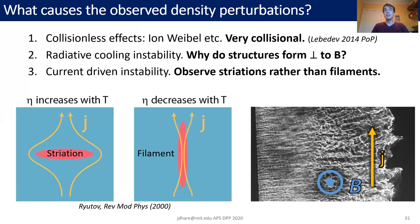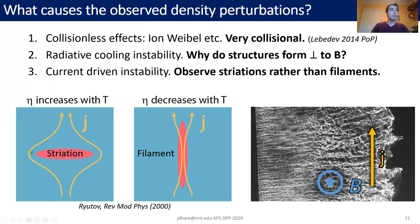Finally, we could look at a current-driven instability. These are well known in the z-pinch community and are reviewed by Ryutov in 2000. There are two types of structures that form: in materials where resistivity increases with temperature — like metals — you expect striations, where current avoids hot regions and heats their edges, producing structures perpendicular to the magnetic field. In materials where resistivity decreases with temperature — like a plasma — you expect filaments, with current focused into hot regions extending parallel to the current. However, what we observe is striations perpendicular to the current, not filaments parallel to the current, which is quite surprising in a plasma. Unless there's some effect making our resistivity effectively increase with temperature, we still don't fully understand this.